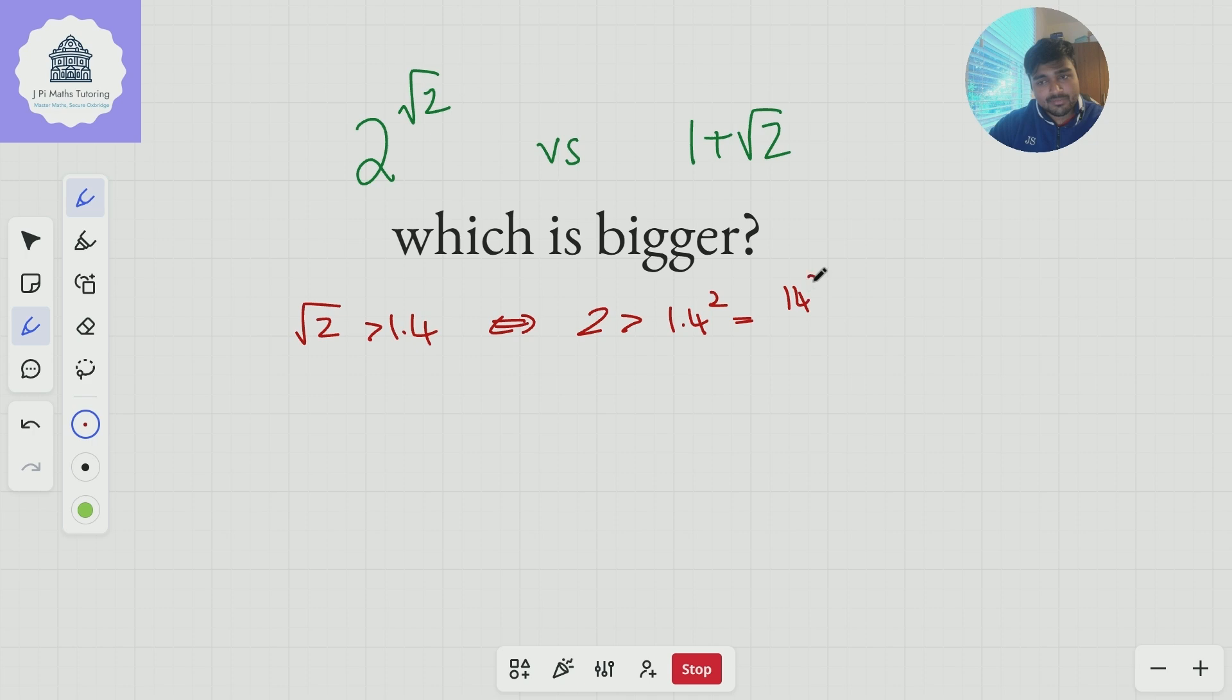Well 1.4 squared is the same as 14 squared over 10 squared, 14 squared is 196, 10 squared is 100, and so that's 1.96, so 2 is genuinely bigger than 1.96, so root 2 is bigger than 1.4.